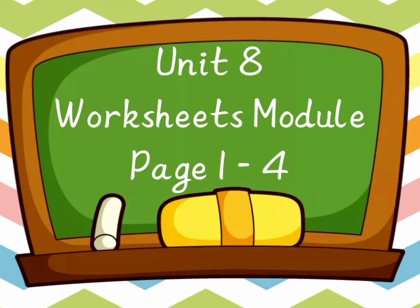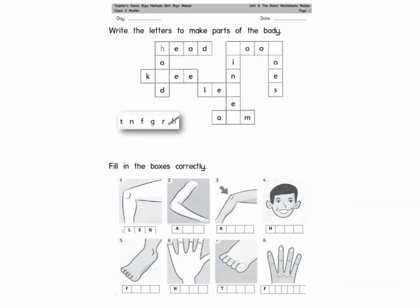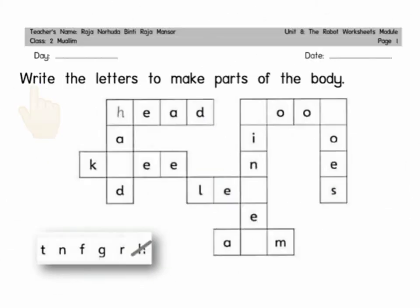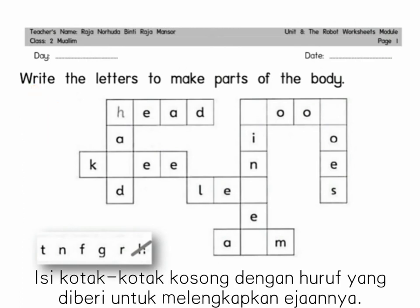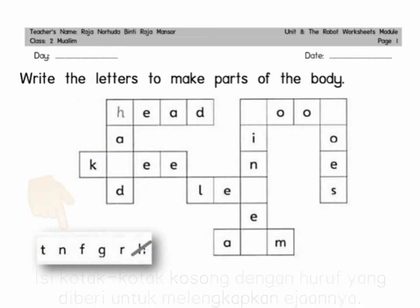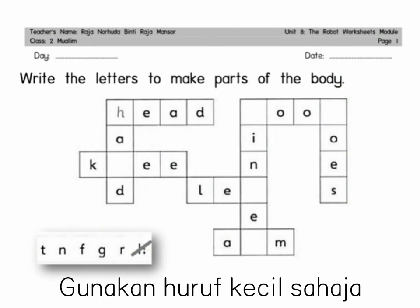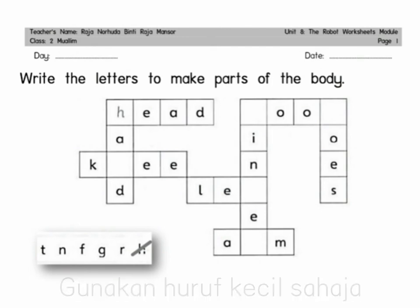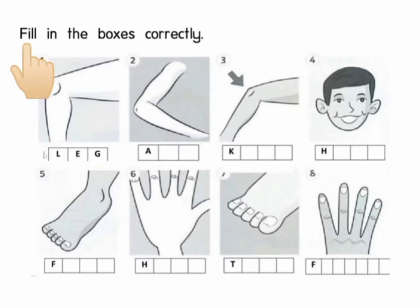Year 2, Unit 8 Worksheets Module, Page 1: Write the letters to make parts of the body. Fill in the boxes with the letters given to complete the spelling. You have to use small letters for this exercise. Fill in the boxes correctly based on the pictures.